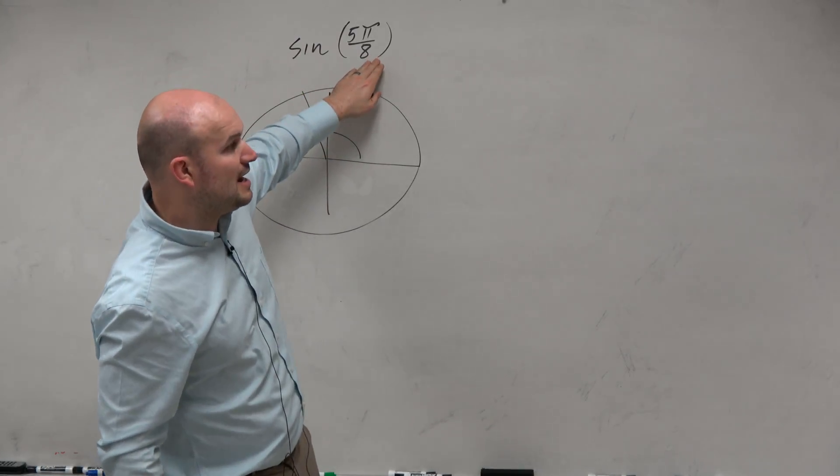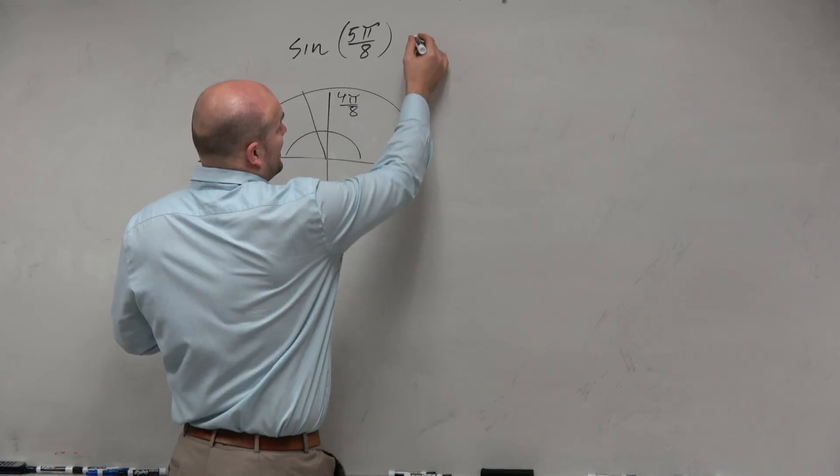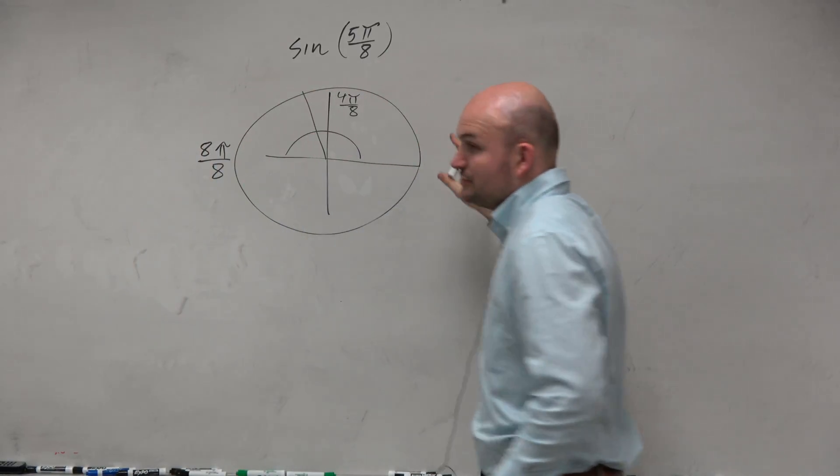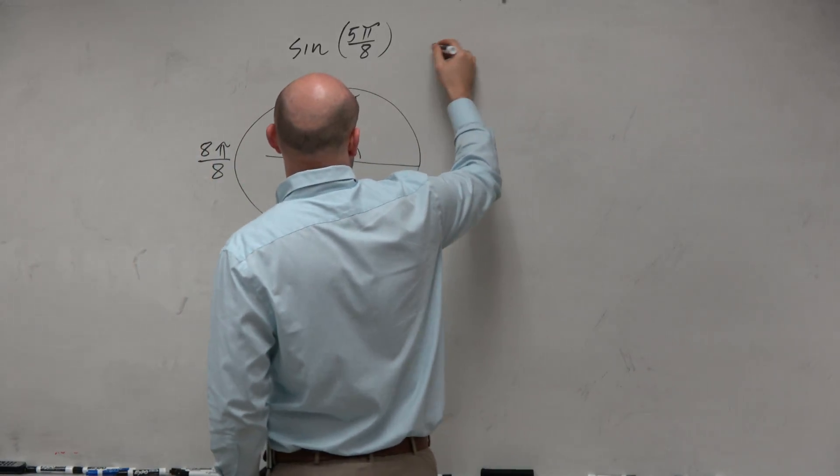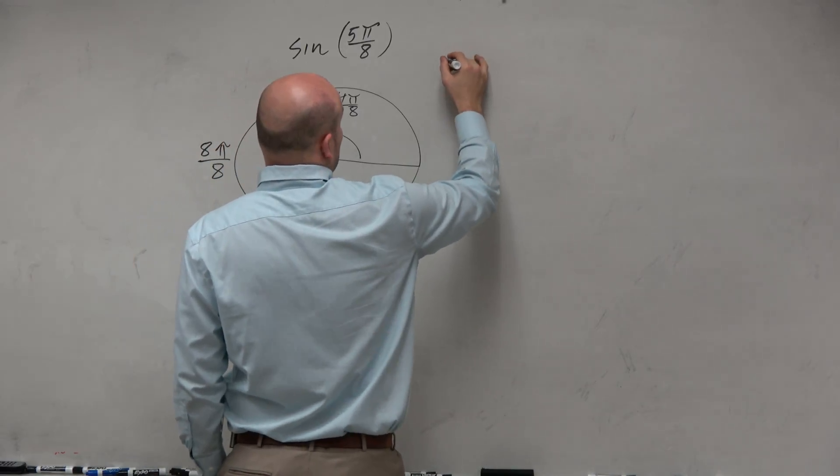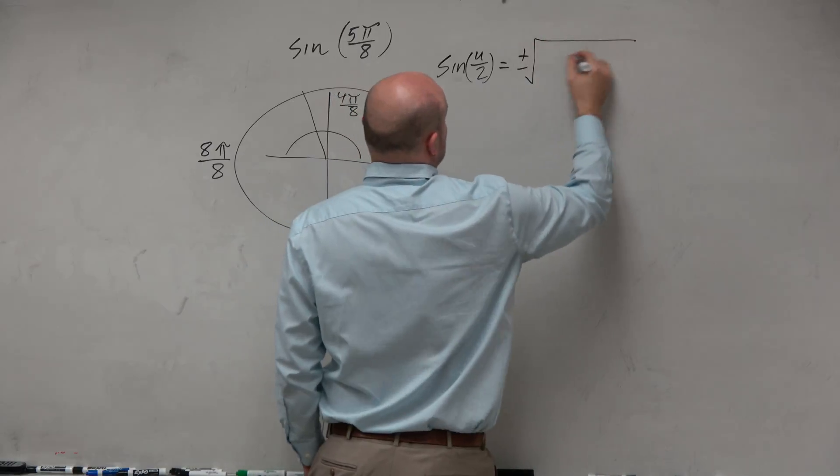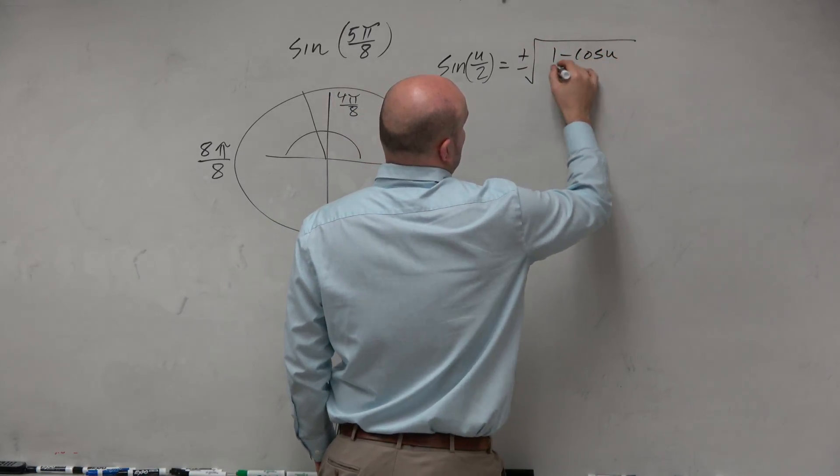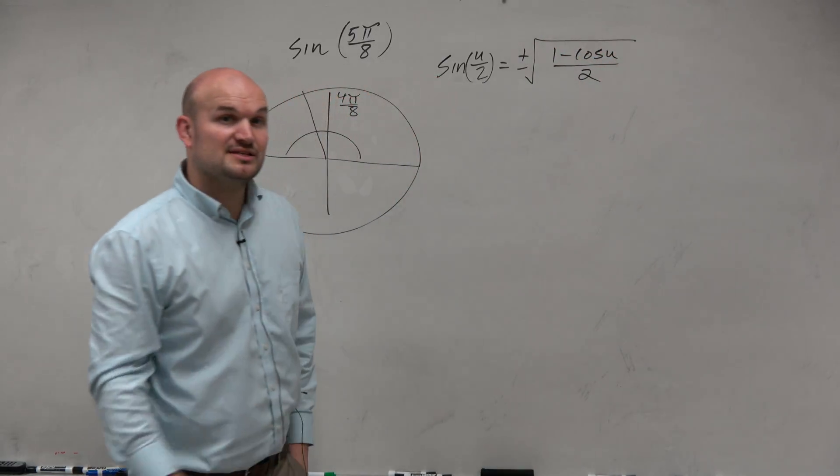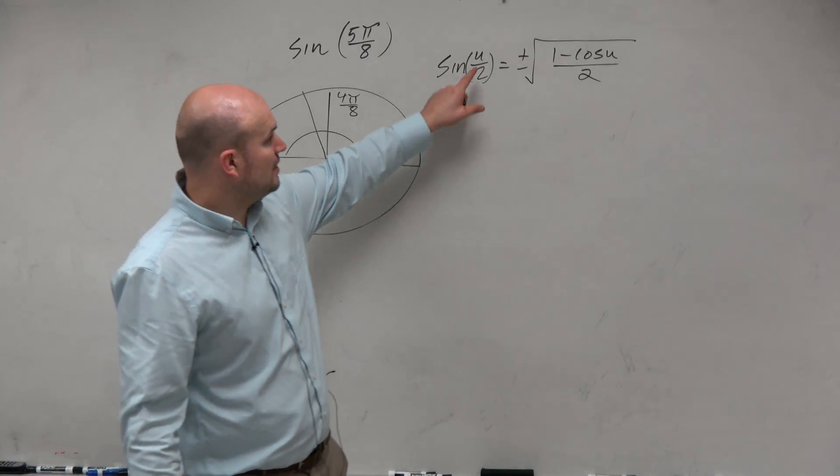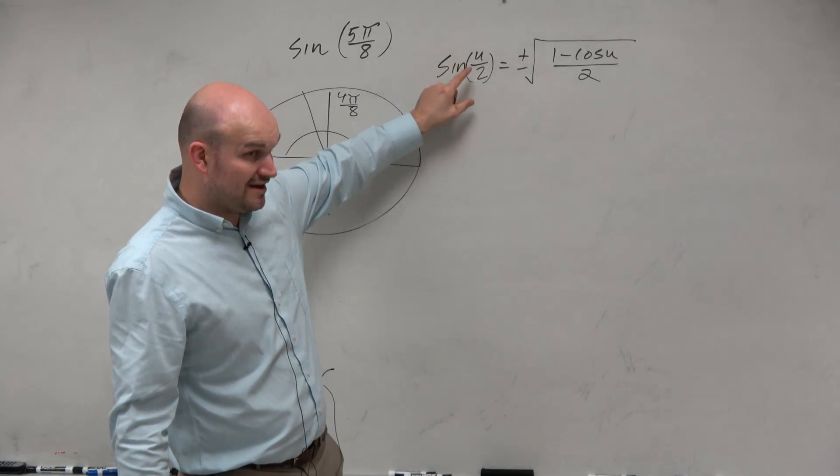So now let's go and look at the sum and difference formula. Let's just look at the general sum and difference formula. So sine of u divided by 2 equals plus or minus the square root of 1 minus cosine of u over 2. Now, a couple things to notice. First of all, it's a sine of a half angle.